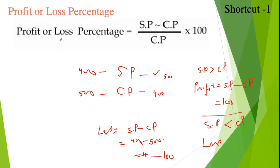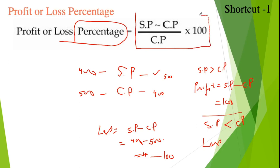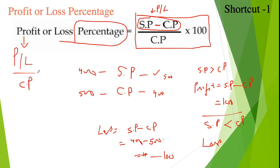Sometimes questions ask you to calculate profit percentage or loss percentage. The formula is: (Selling Price minus Cost Price) over Cost Price, multiplied by 100. The numerator represents profit or loss, and this formula helps you calculate profit percentage or loss percentage. You can remember it as: Profit or Loss divided by Cost Price, multiplied by 100.